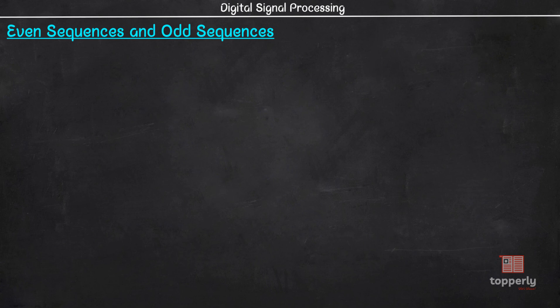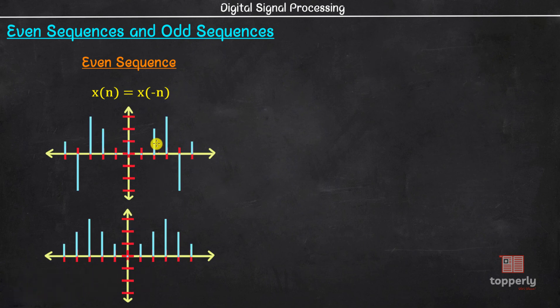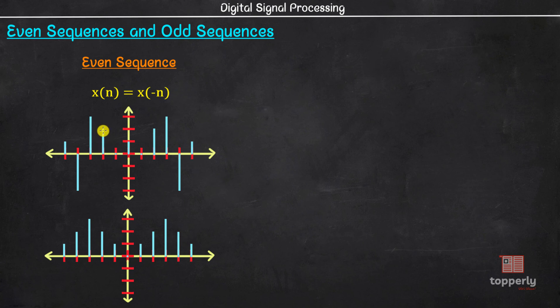Any sequence can be classified into even or odd sequence based on its symmetry with respect to time index n equal to zero. An even sequence is one in which x(n) equals x(-n), that is a sequence which is symmetric with respect to the y-axis. These two discrete signals are symmetric as they mirror about the y-axis and follow the rule x(n) = x(-n). For instance, at n=1 we have 0, so at n=-1 also we have 0; at n=2 we have 2, therefore at n=-2 also we have 2.